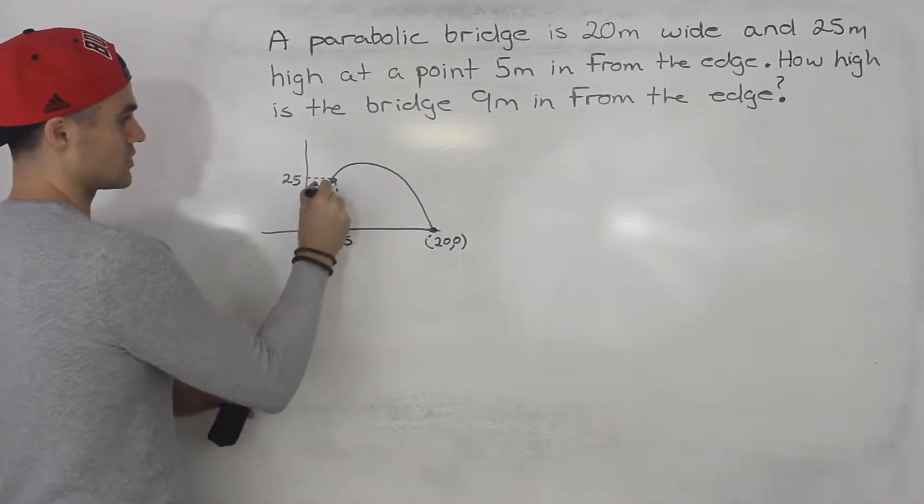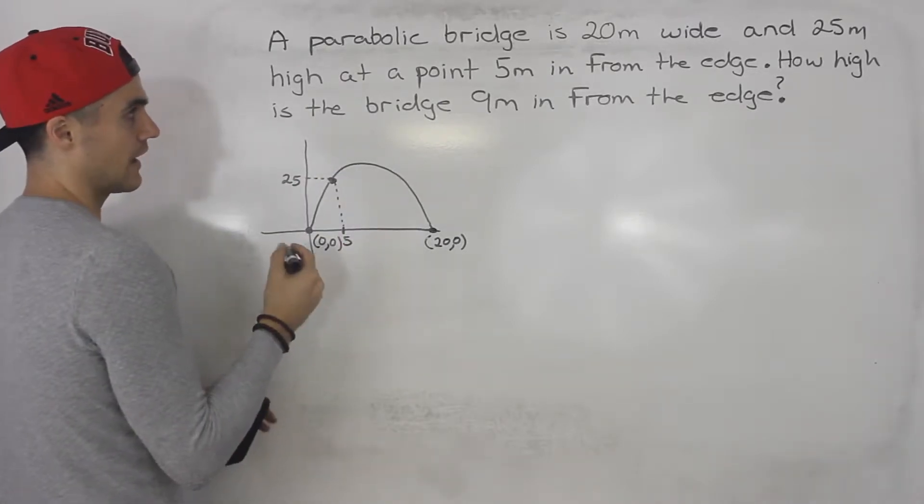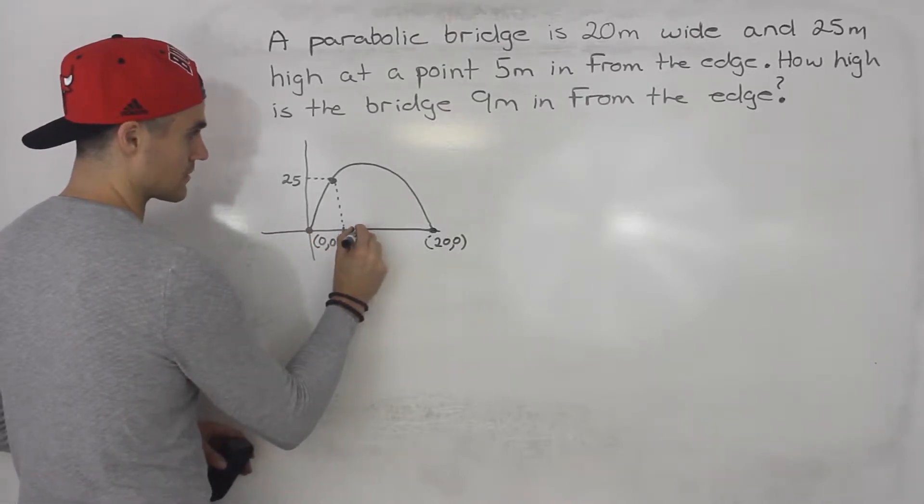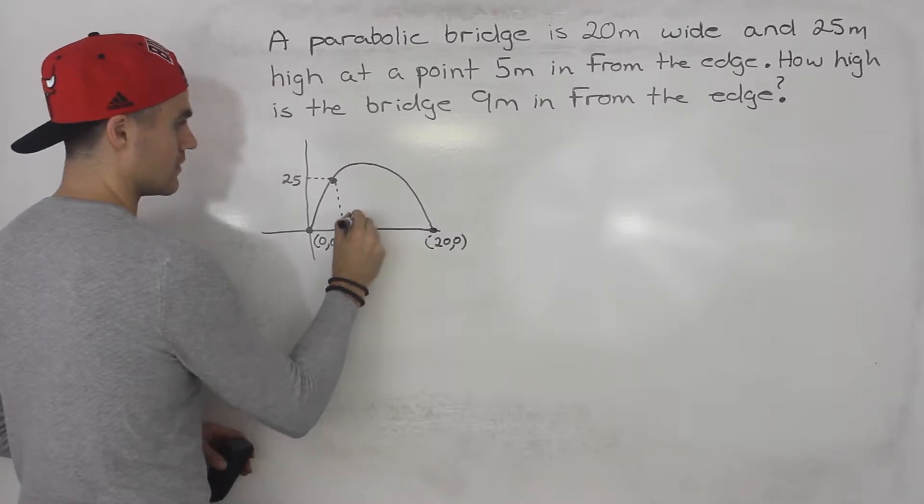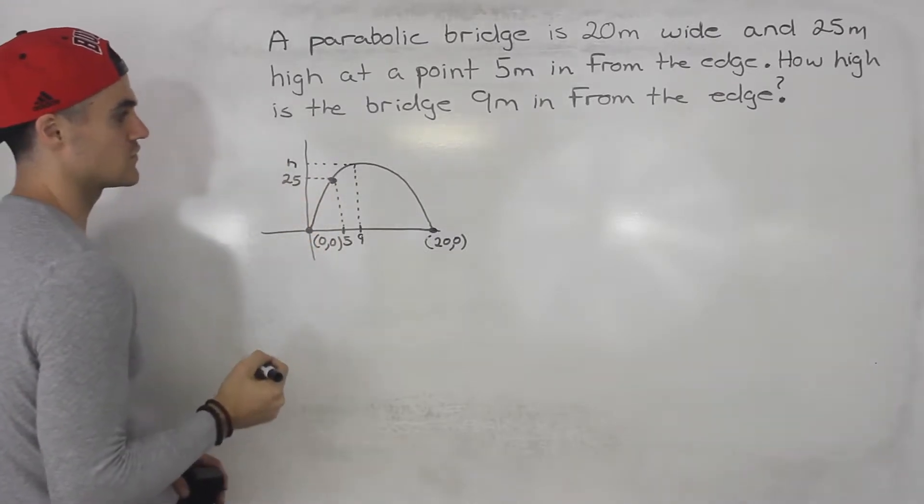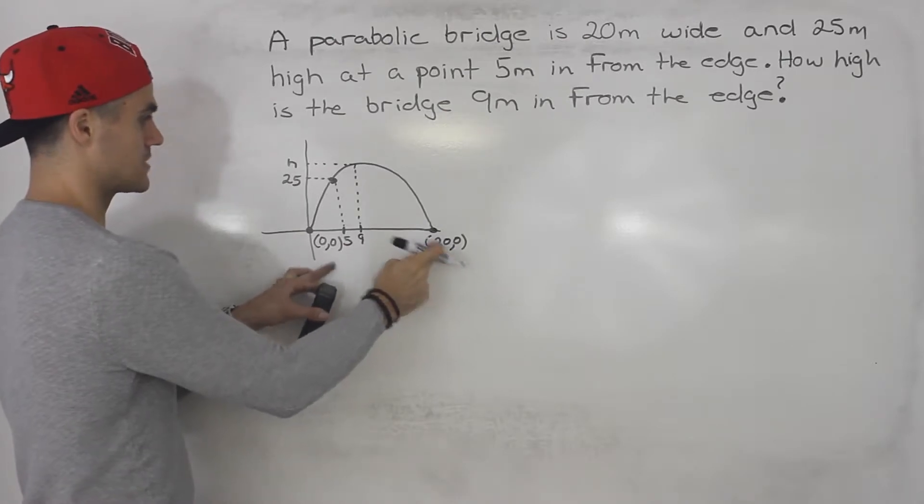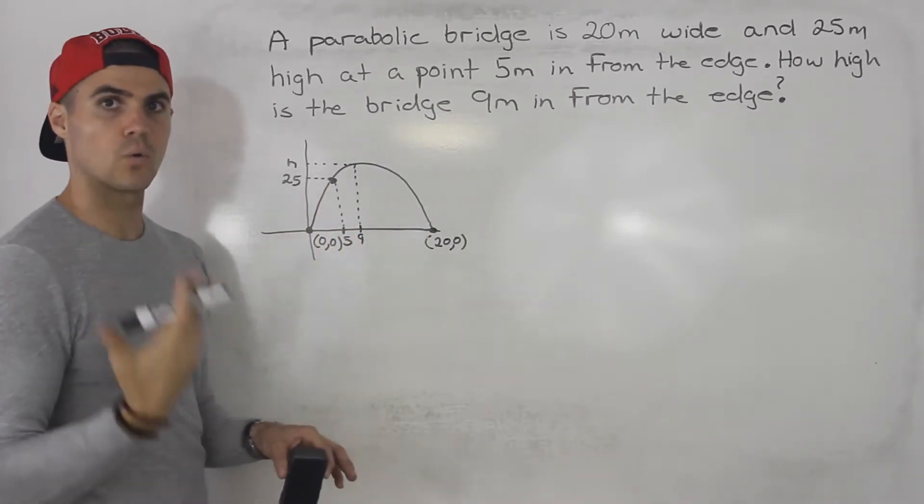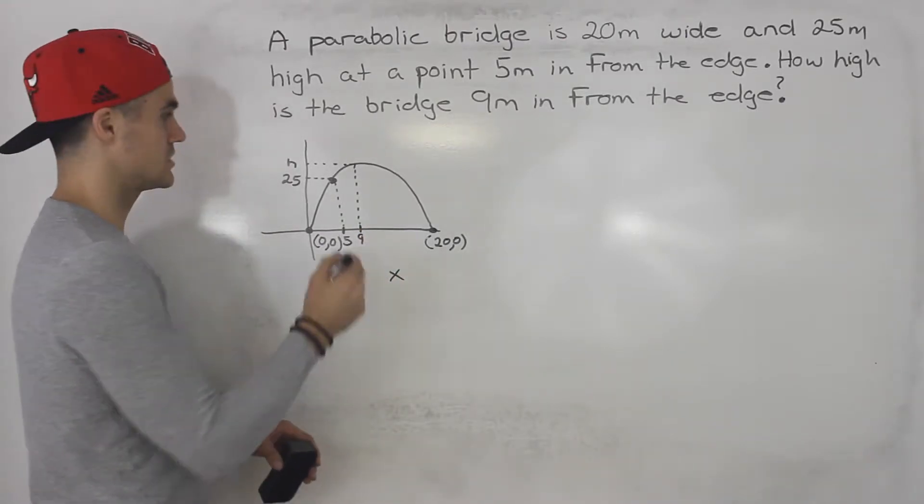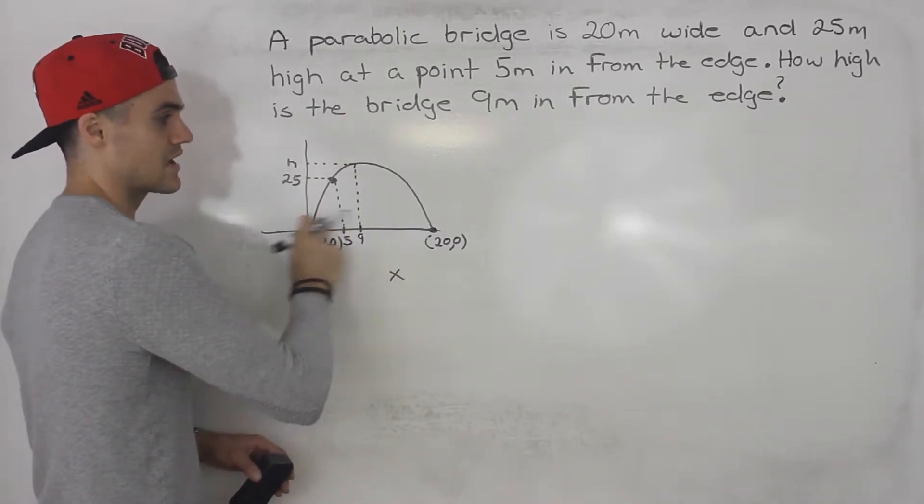So five meters in from the edge, the height is 25. So this point basically has a coordinate 5 and 25. And what they're asking for is nine meters in from the edge. So let's say around here. What is the height going to be? So we're solving for that h value here. So what you want to do is you want to take these two intercepts and you want to take this known point, find an equation, and then you could just plug in nine for the x value in the equation to get the height where x represents the distance from this edge here.